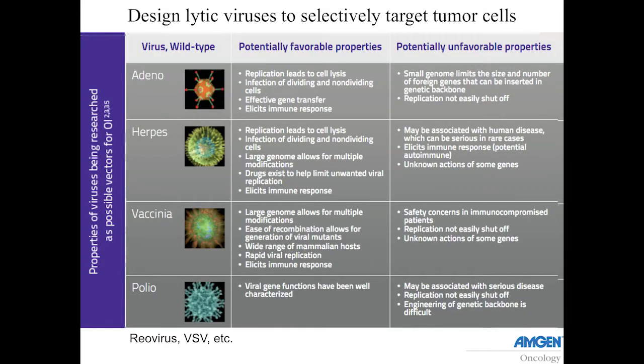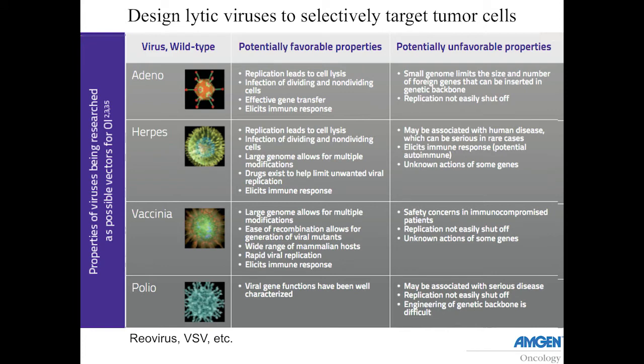Viruses that have been tried include adenoviruses, herpes viruses, vaccinia, and polio. The important criteria for choosing a virus: do they replicate in dividing cells? Do they lyse the cell after replication? Is the genome large enough to add payload genes? Negatives include unknown gene actions or potential pathology. Based on these criteria, you decide which goes into trials.